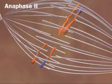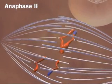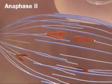In anaphase II, the chromatids finally separate. Remember that they stayed together in anaphase I.